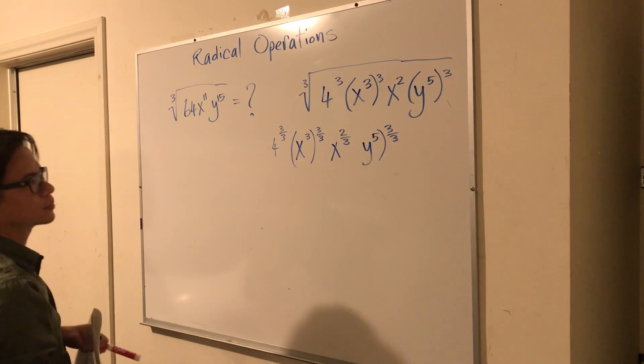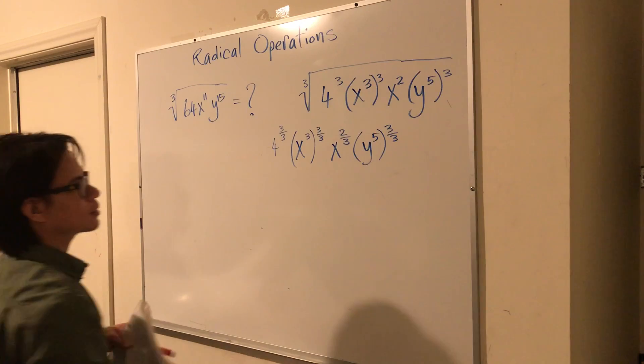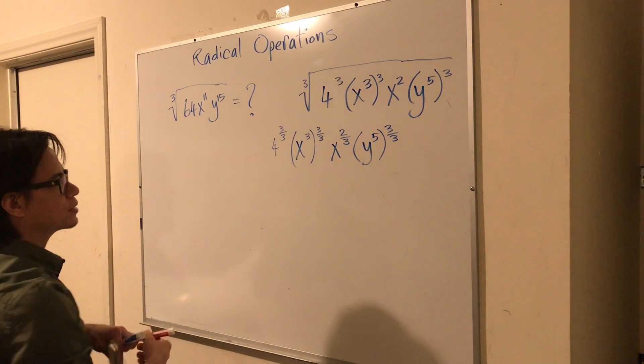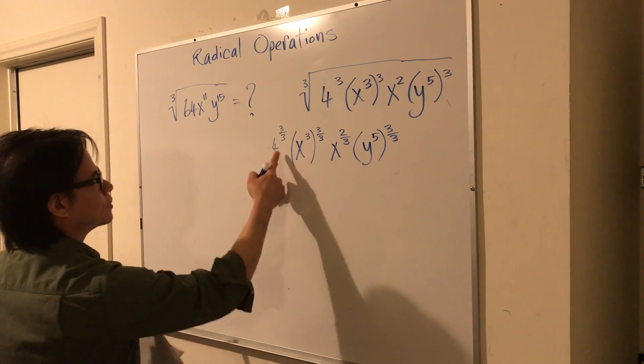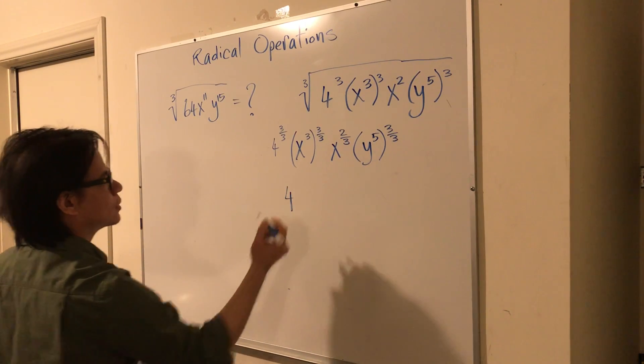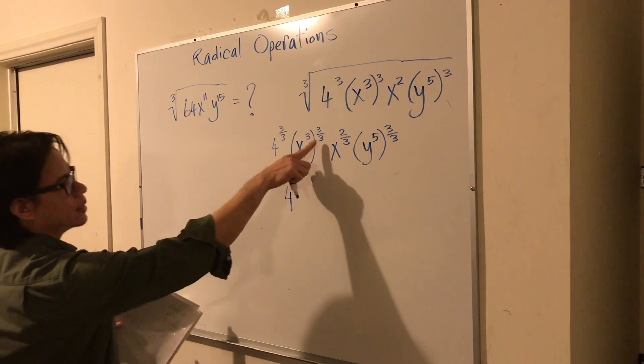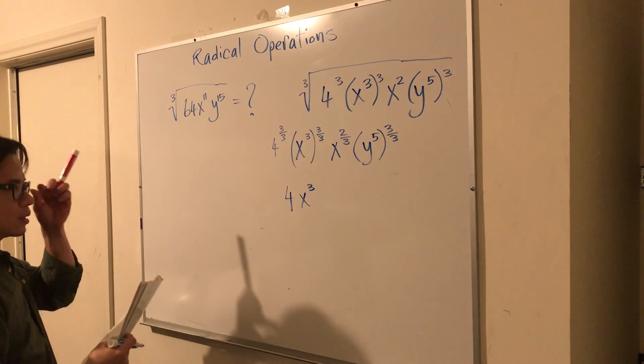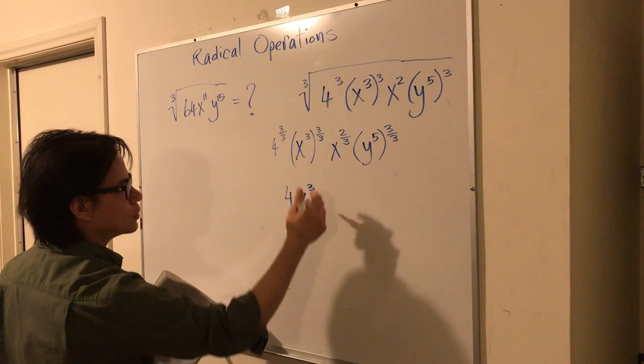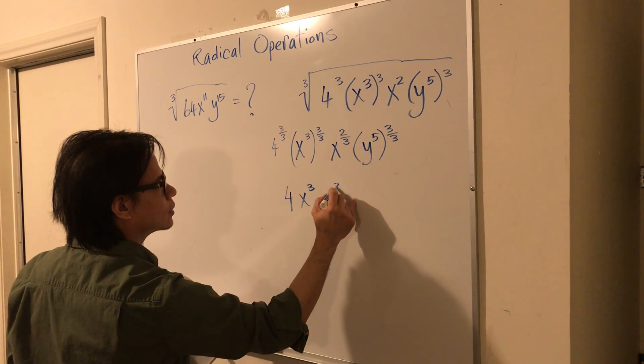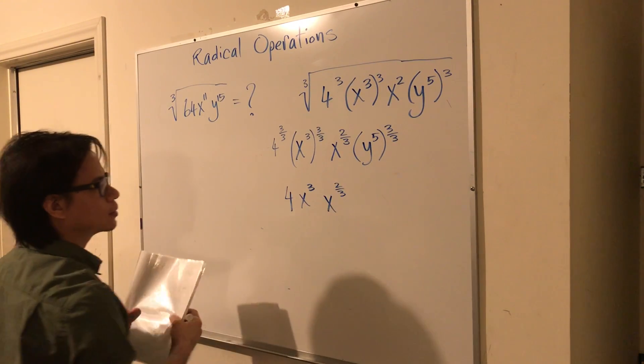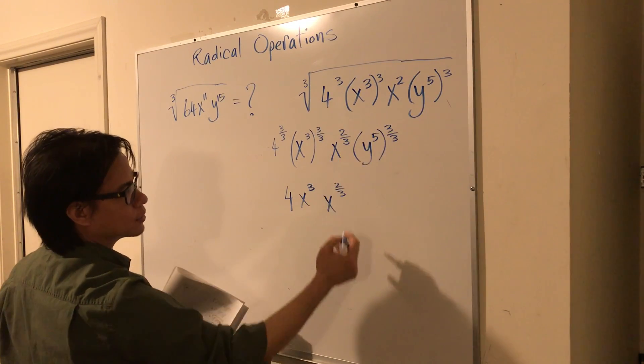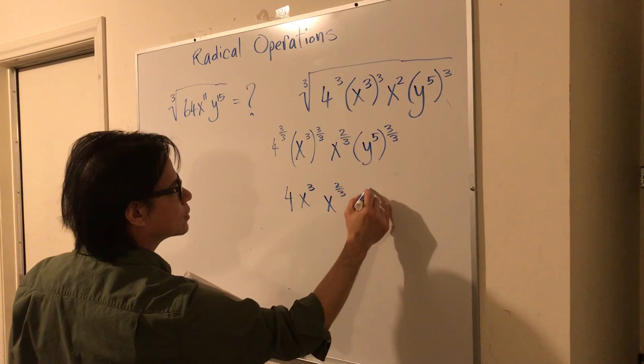Now watch the fractions carefully. 3 over 3 is the same as 1. So you can leave this as 4. Again, that's 1. So what we have left is x to the third. Nothing we can do here. So we'll leave that as x to the 2 third. And then here you have, again, 3 over 3 is 1. So we'll have y to the fifth.